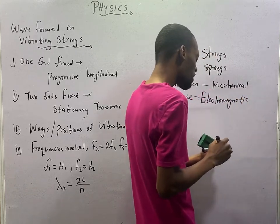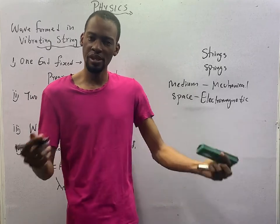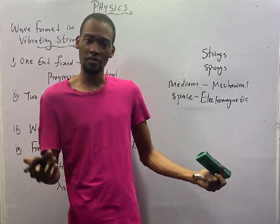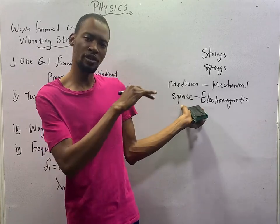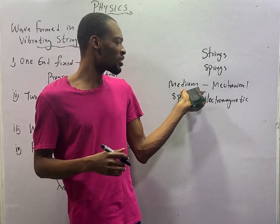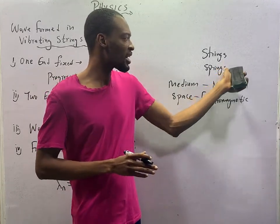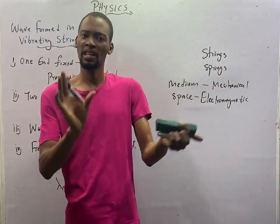Examples of electromagnetic waves are gamma rays, earth rays, ultraviolet rays, light waves. All these can travel in space or without medium. Examples of mechanical waves are sound waves. And waves in springs and strings are also mechanical waves.